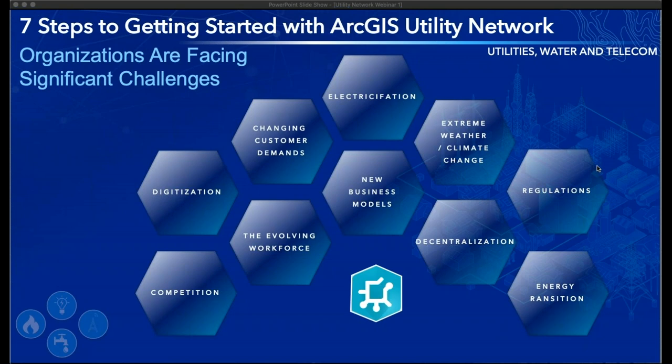It is for this reason that Esri has made a significant investment in developing the ArcGIS Utility Network. It is purposely built to help utilities across the electric, gas, water, and telecom industries — not just to do what a traditional GIS does, but to redefine what GIS is within a modern organization. The Utility Network is the enabling technology to unlock the capabilities of a modern, complete GIS platform, using the power of location to digitally transform organizations.